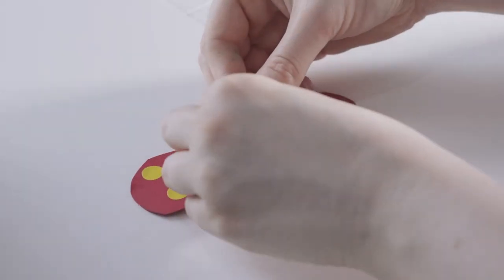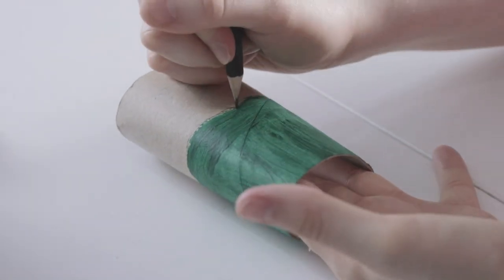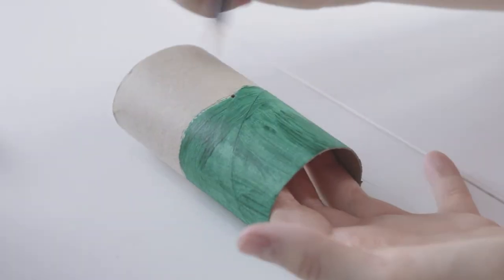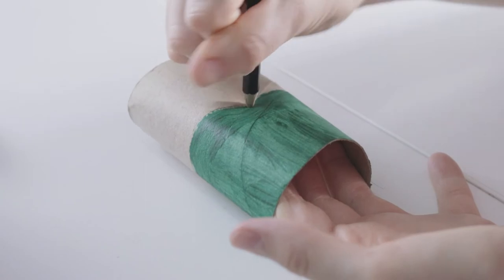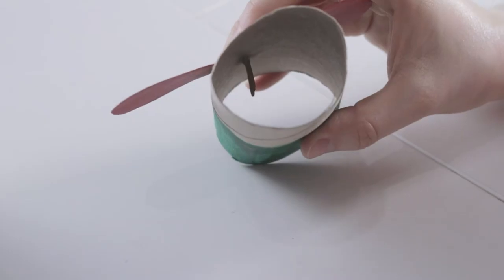Push a safety pin through the middle of the bowtie. Then, push a hole through the cardboard tube on the line between the painted and unpainted part. Attach the bowtie to the cardboard tube using the safety pin and bend the pins so that the bowtie can spin.